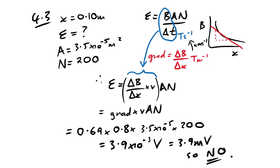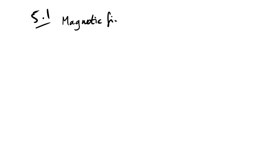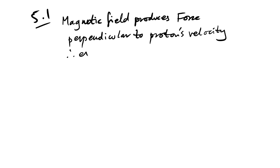Question 5.1: we have a cyclotron. Why does a proton travel in a semicircular path? Because the magnetic field produces a force perpendicular to the proton's velocity, and therefore the proton experiences a centripetal force.